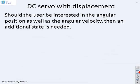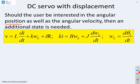What about a DC servo with displacement? Now, should you be interested in the angular position as well as the angular velocity, you're going to need another state. So what I've done here is I've introduced one extra equation, which shows me the relationship between the angular position and the other state. So you'll see angular position theta l is the derivative of angular velocity.